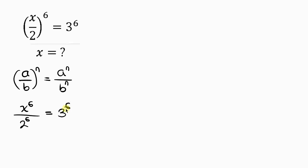Our next step will be to cross multiply. I'm going to put 1 under the right side, so when I cross multiply: x to the 6 times 1 is x to the 6, equal to 2 to the 6 times 3 to the 6.